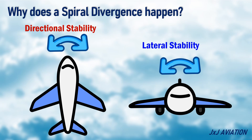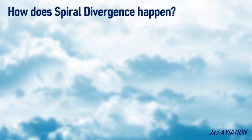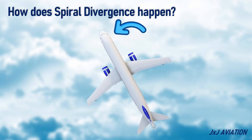Let's see how a spiral divergence happens. Let's consider an aircraft in flight which is subject to a wind disturbance from the right of the aircraft. This disturbance causes the aircraft to yaw towards the left. The right wing moves faster than the left wing during the yaw, which causes the lift to increase. This causes the aircraft to roll towards the left.